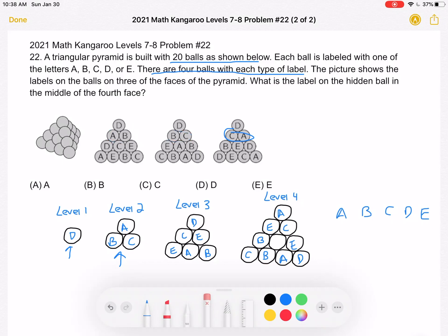For level three, we have D, C, and E, which I wrote across over here. Then we have E, A, B over here, and B, E, D over here.